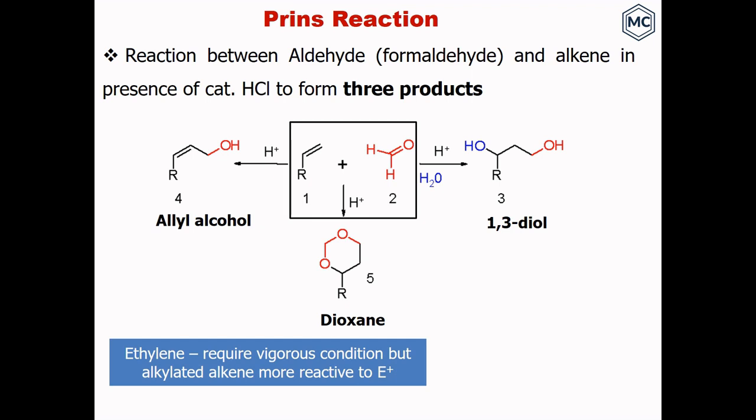So in this slide, I am showing the same topic by 2016 PowerPoint. So Prins Reaction, and it is a reaction between aldehyde and alkene in the presence of catalytic amount of HCl. And it form three products. And reaction of alkene with the formaldehyde, it give three products.